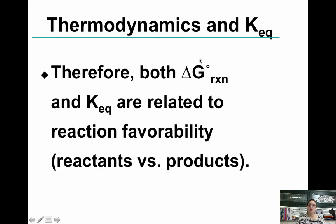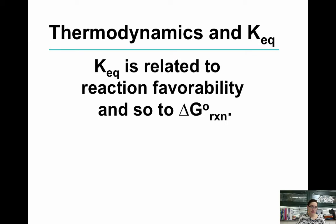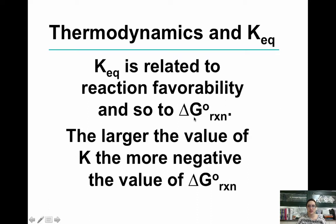Therefore, both delta G and K are actually related to reaction favorability, whether it's reactants or products. And the equilibrium constant is related to favorability, therefore it's related to delta G, because both of these variables are related to favorability of a reaction, so they're related to each other.